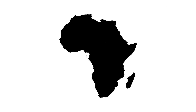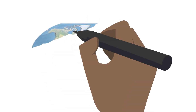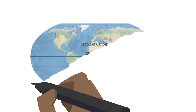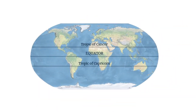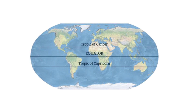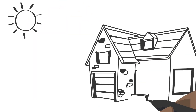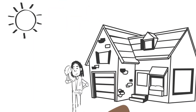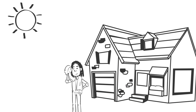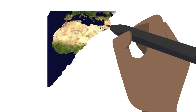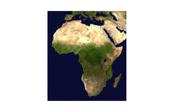Africa is uniquely positioned on earth. Most of its landmass is located along the tropical latitudes of the equator and the Tropic of Capricorn, where it is possible to have the sun shining directly overhead most of the time. Due to such positioning of Africa, several different climate types can be found within the continent.